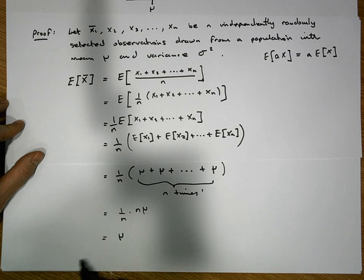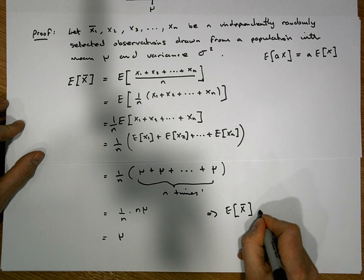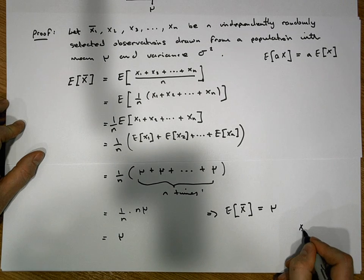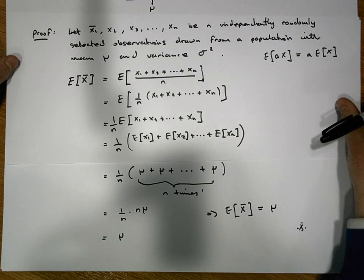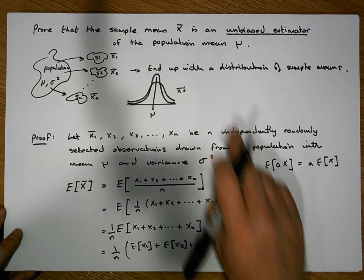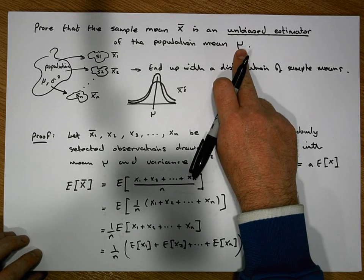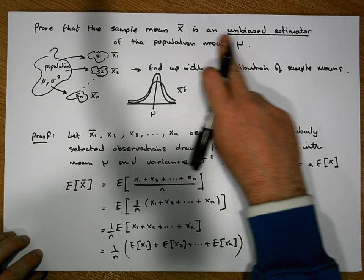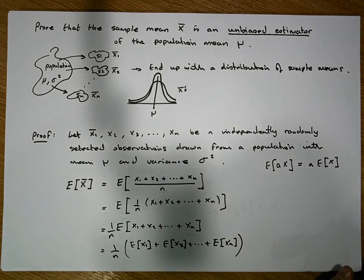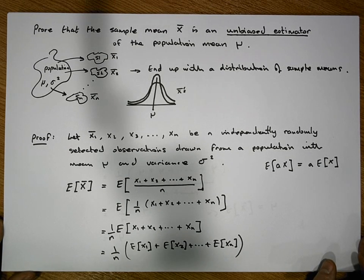So what we've shown here is that the expected value of the sample mean is equal to mu, the population mean. More importantly, we've shown that the expected value being equal to the population mean is what by definition makes x-bar an unbiased estimator of the population mean. Once again, this is Jonathan Lambert with the Mathematics Development and Support Service at the National College of Ireland — I hope this video was somewhat helpful.